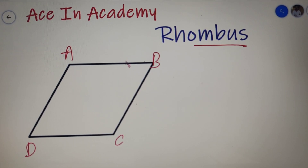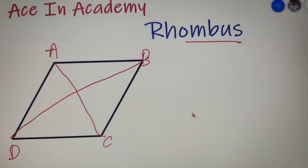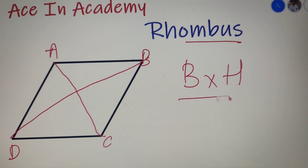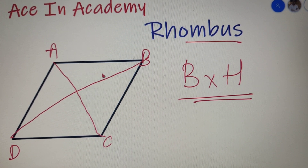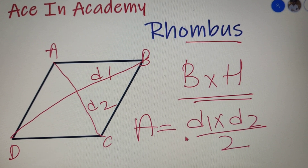Moving on to the perimeter of the rhombus: if I take the length of any side as X, then the perimeter is equal to 4X. The area of a rhombus is equal to base times height. Now if you know the lengths of the diagonals, suppose them to be D1 and D2 respectively, then the area is also equal to D1 times D2 divided by 2. So we can find the area of the rhombus by either of these two formulas.